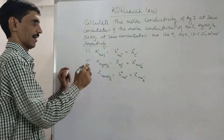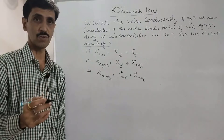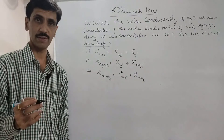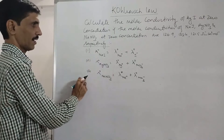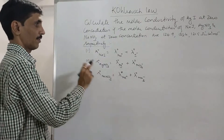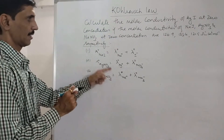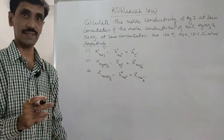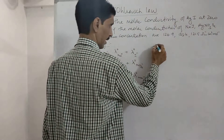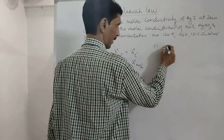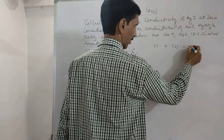This is according to Kohlrausch law, as I have already explained in the previous video. Now, on the basis of this data, we want to find the molar conductivity of AgI. So what we do is: equation 1 plus equation 2 minus equation 3.